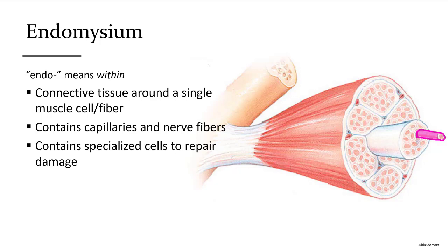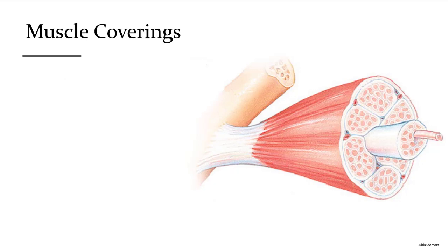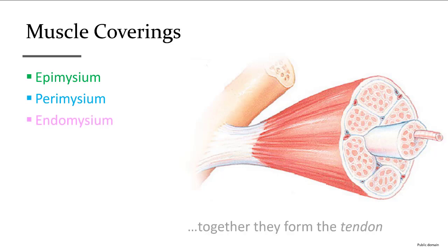To review: the epimysium surrounds the entire muscle, the perimysium wraps around bundles of muscle cells, and the endomysium goes around a single muscle cell. The ends of all three layers extend beyond the muscle and fuse together to attach to bone as a tendon.